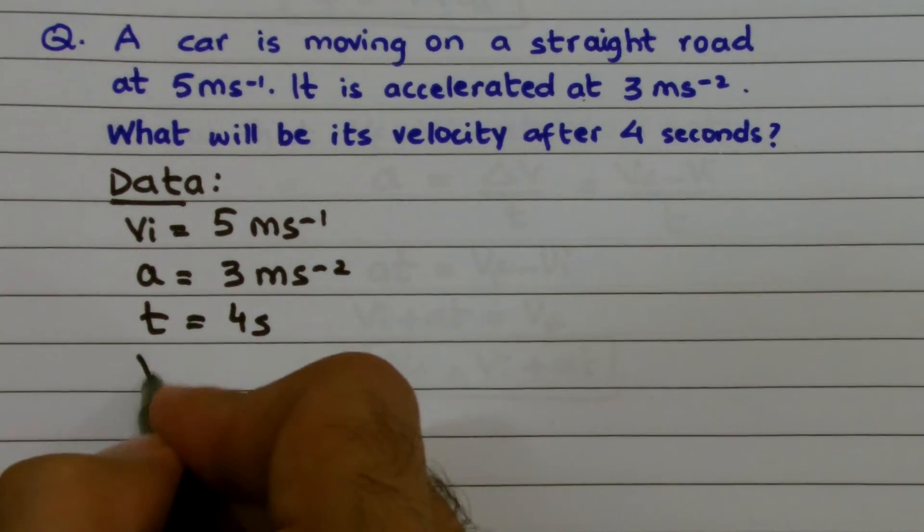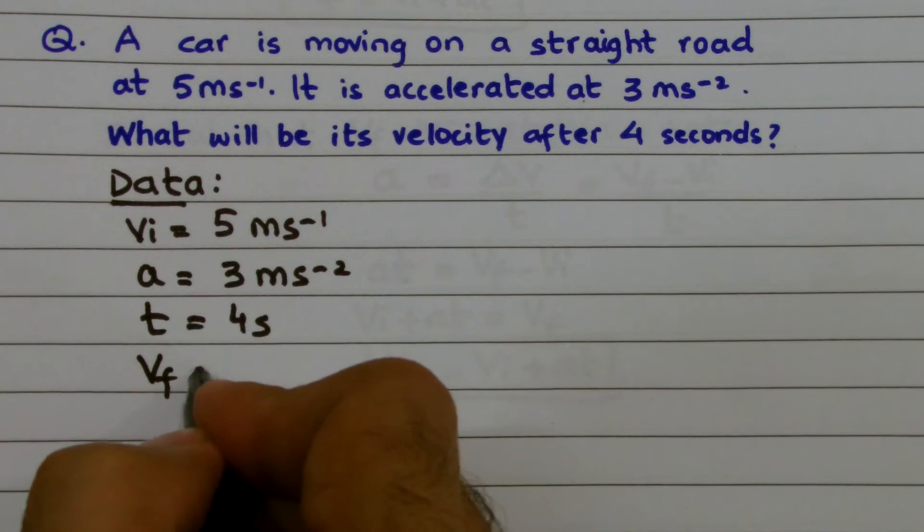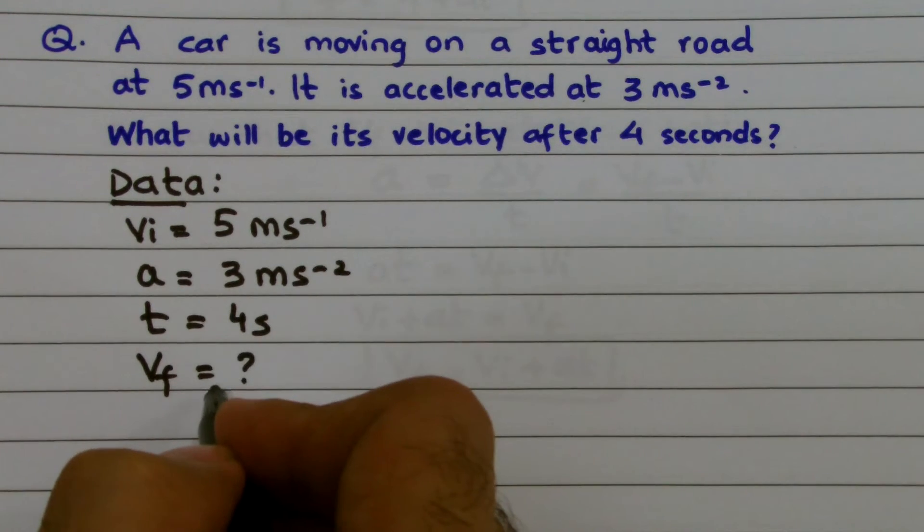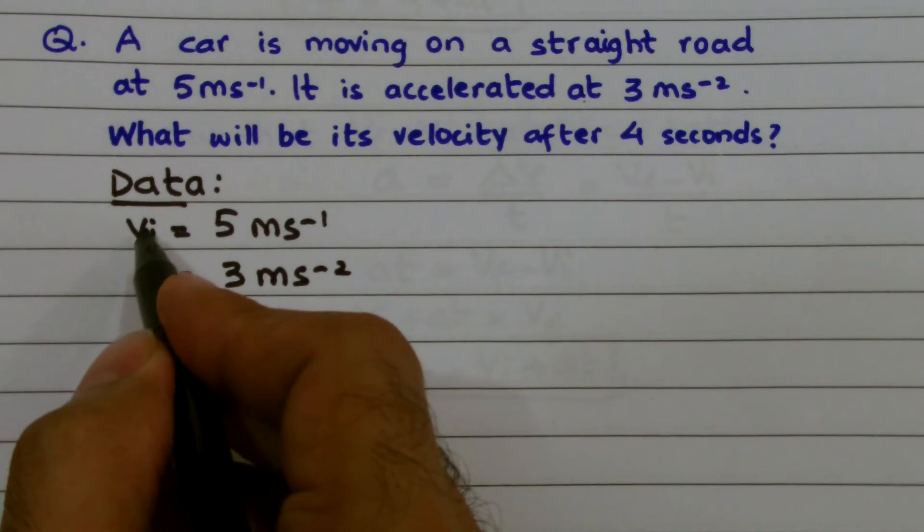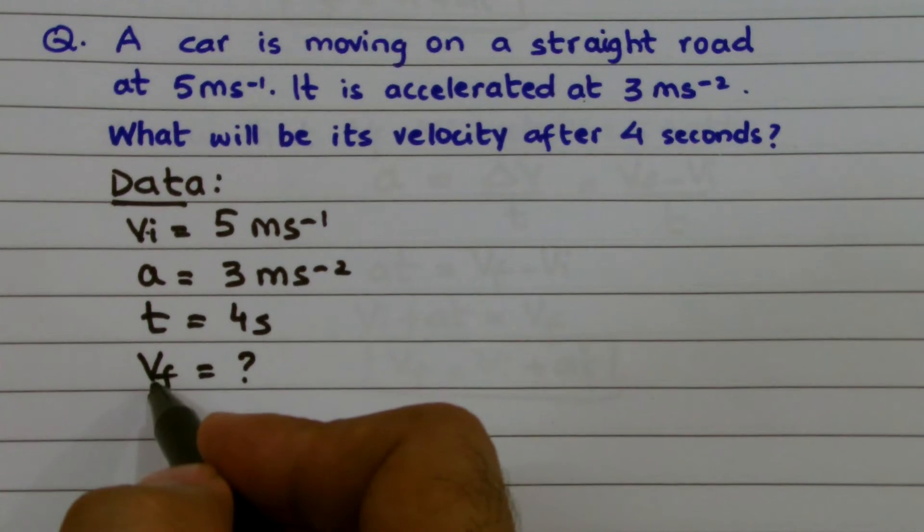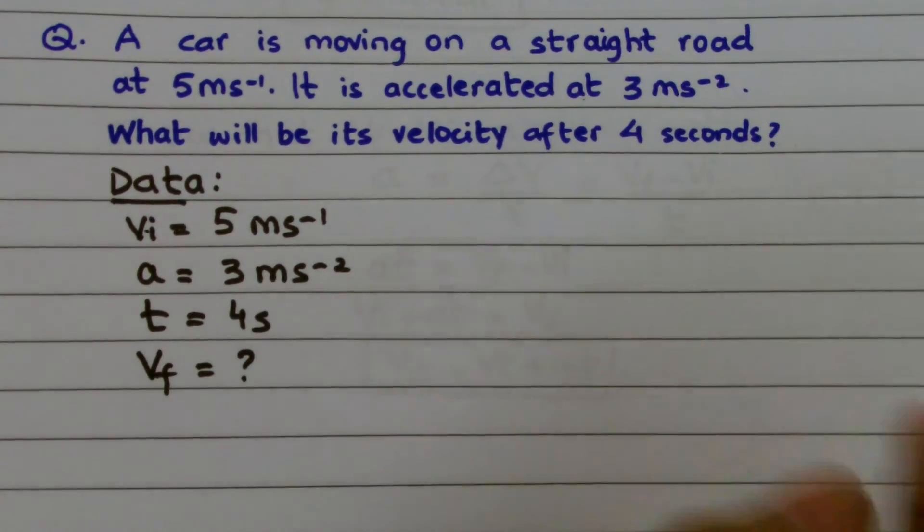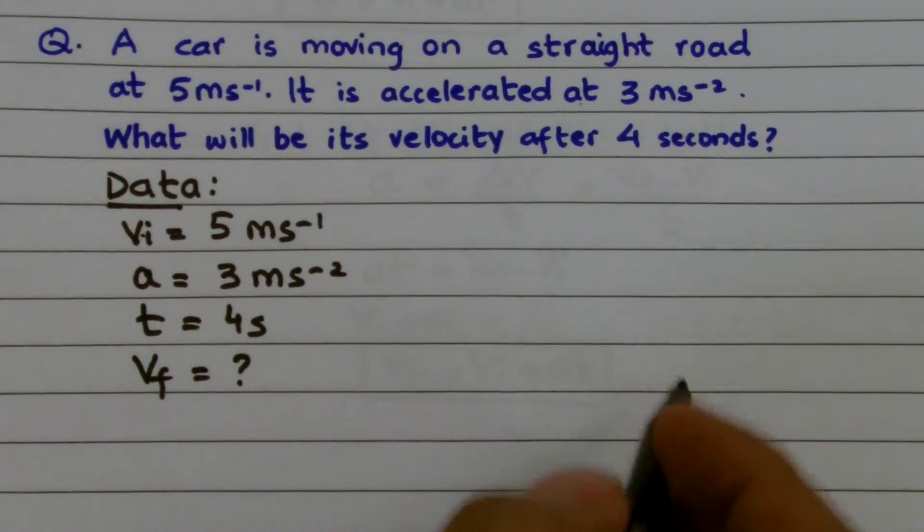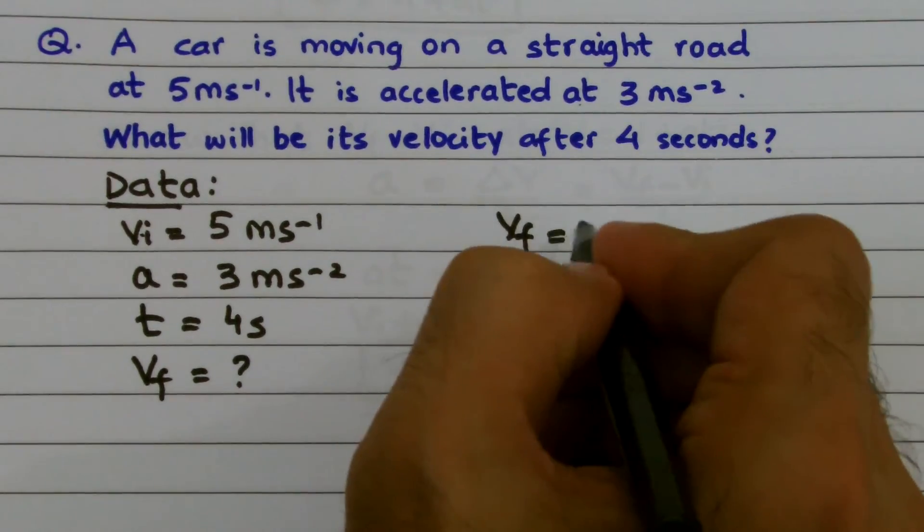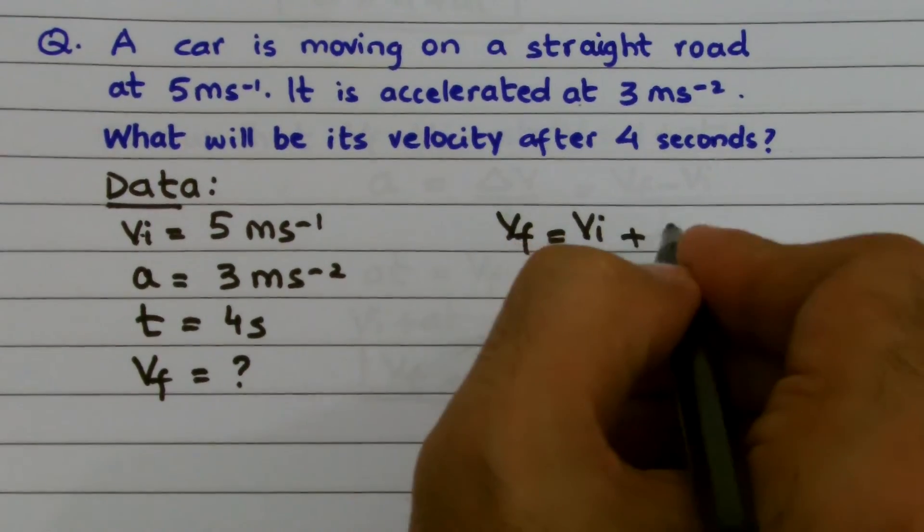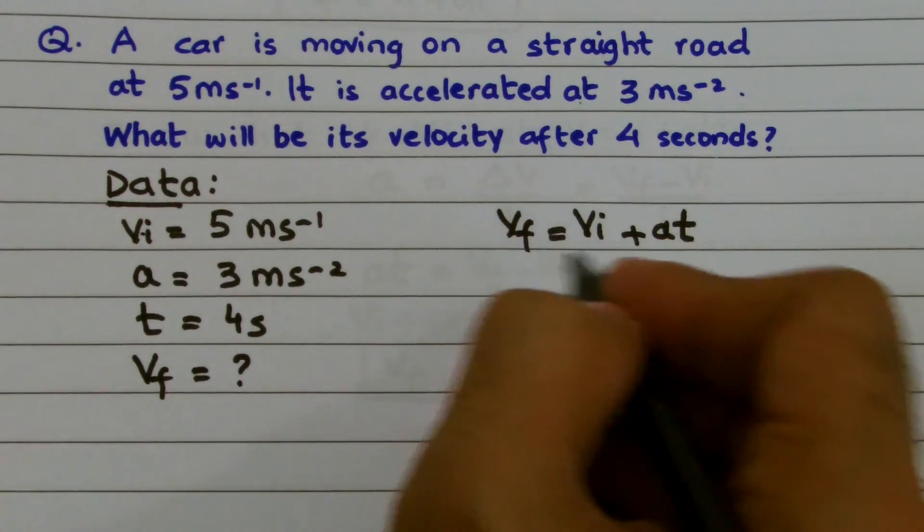I'm looking for the value of final velocity, VF, which is unknown to me. Now, all O-level IGCSE students can use u instead of VI and v instead of VF, as I normally do. So when I write this equation, which is VF = VI + at, I can substitute the values.